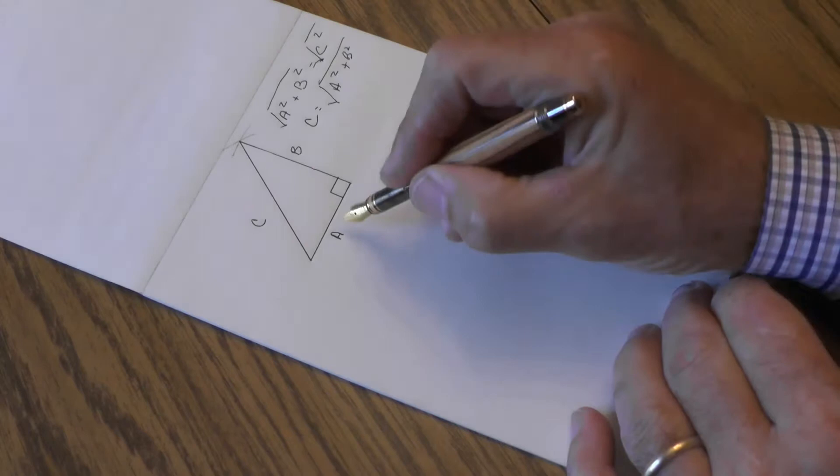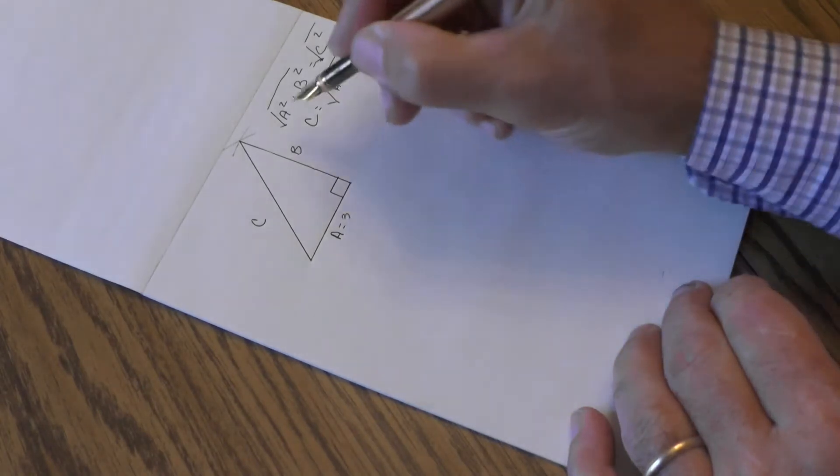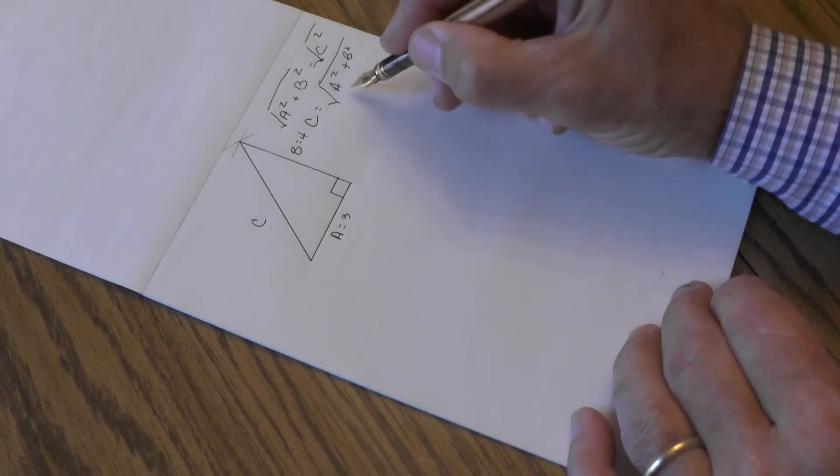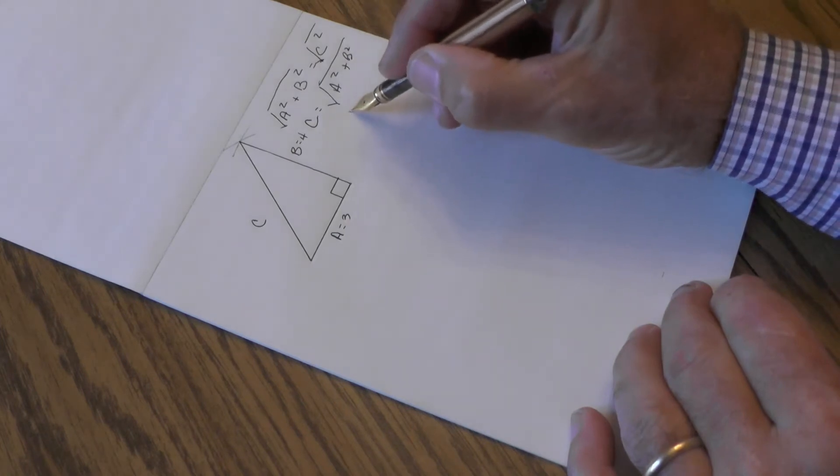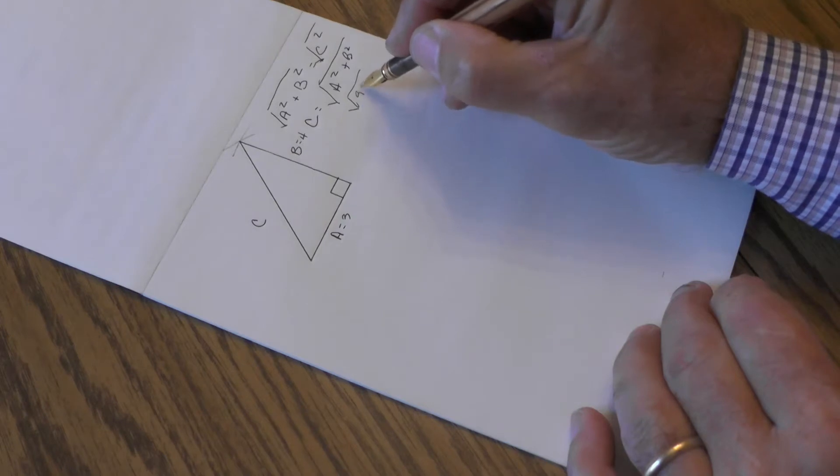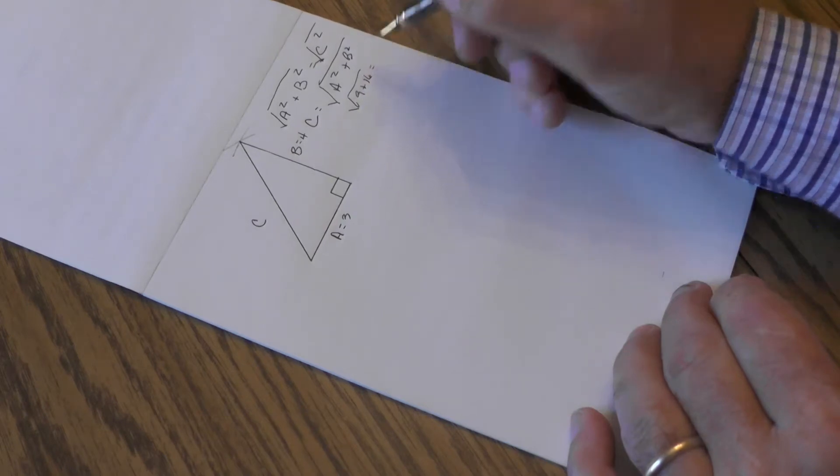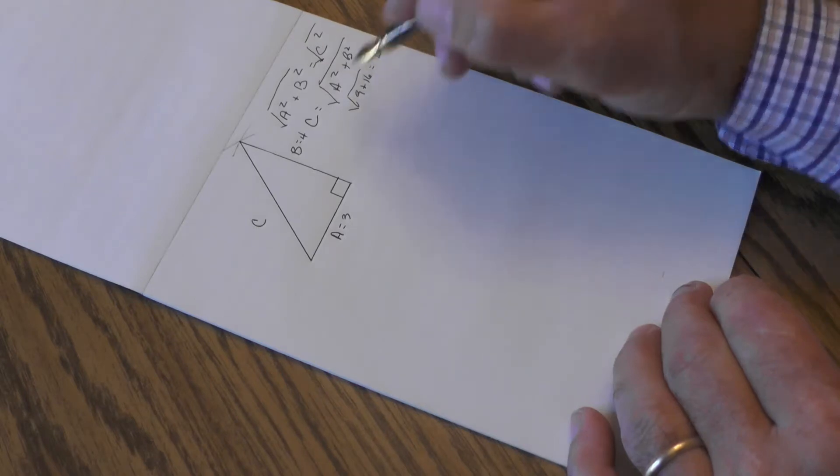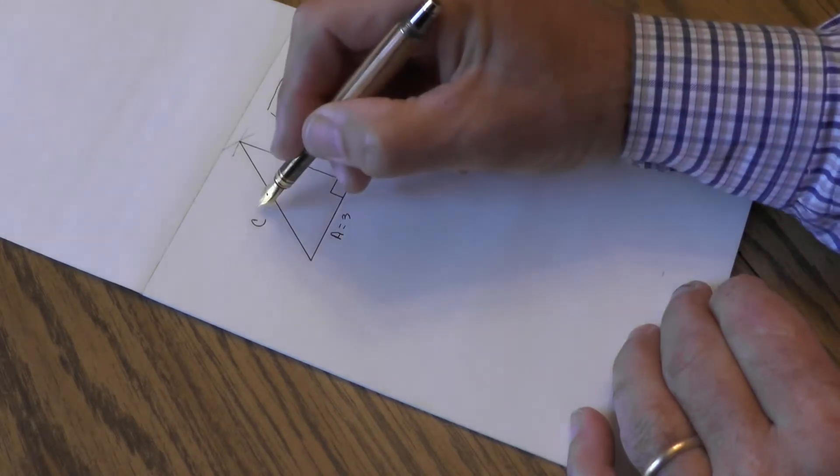Now in the case of this, if A is equal to 3 and B is equal to 4, what is C? Well, this would be the square root of 9 plus 16, or 25, and the square root of 25 is 5. So C is equal to 5.